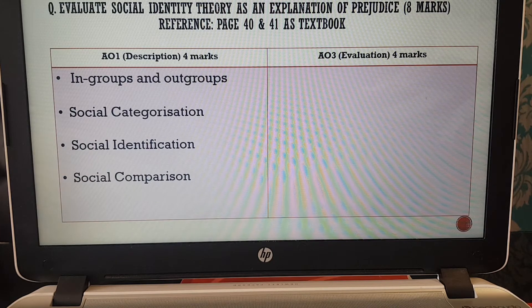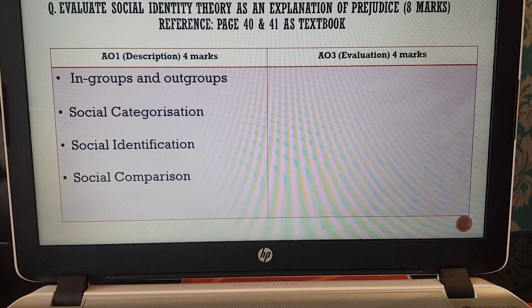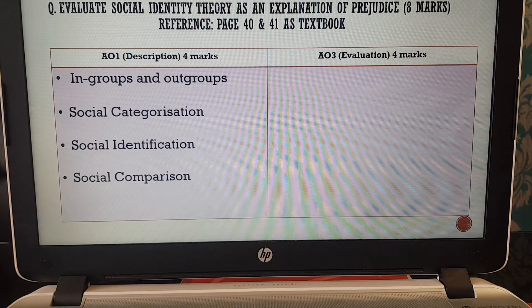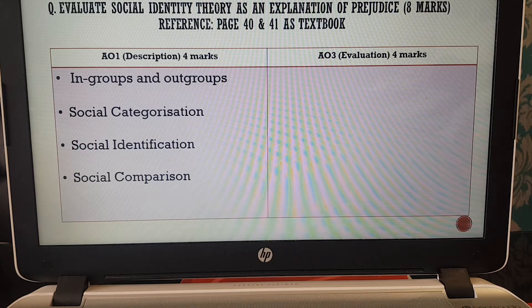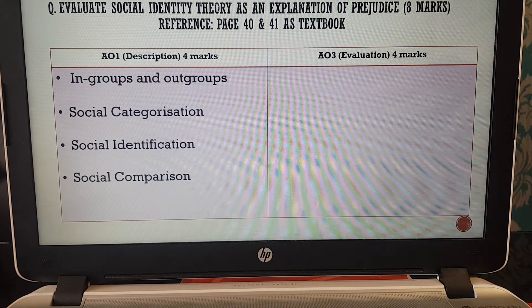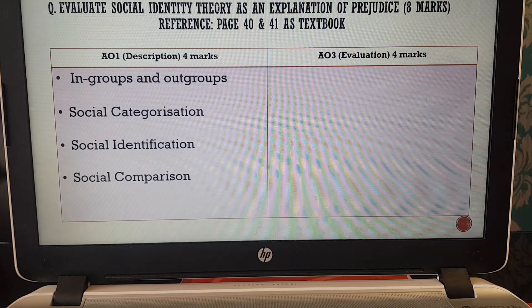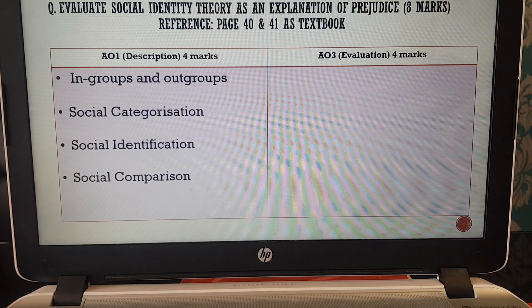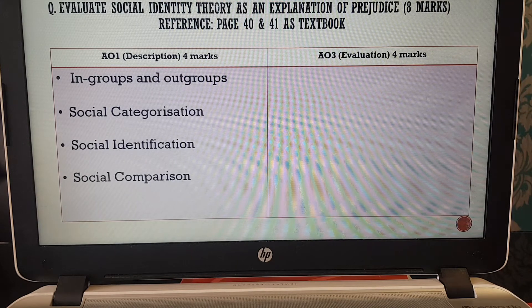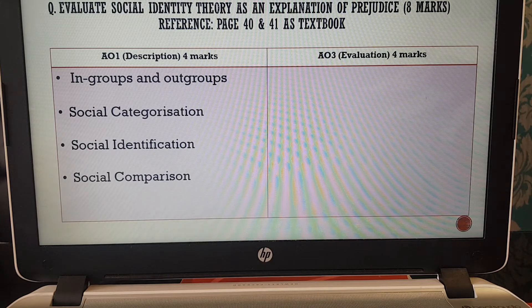Secondly, we need to start looking at three stages of social identity theory and describing those for AO1. Social categorization is the first stage within social identity theory, and in this stage we group ourselves as belonging to either the in-group or the out-group, and we almost refer to ourselves as them and us. It's a good idea to give some examples—for example, I always use the example of football fans. Manchester United versus Manchester City. You're either a Manchester City fan or a Manchester United fan, so you're categorizing yourself as one of the football team supporters.